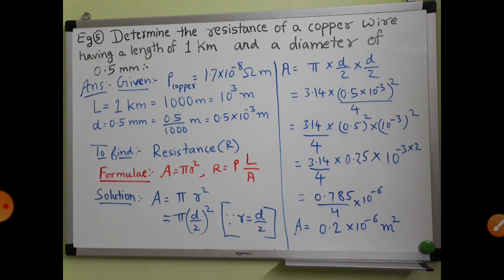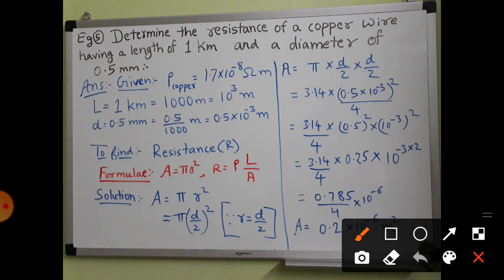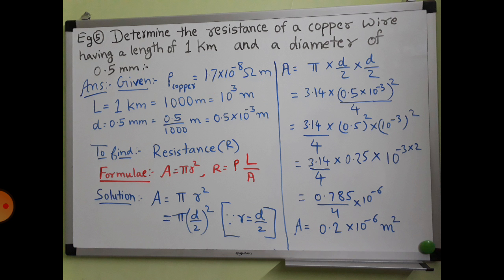Resistance is not given — that is what you have to find out. The given things we will now write: resistivity of copper is 1.7 × 10⁻⁸ ohm·meter, which is given in the example. You should know that resistivity of a substance is constant, so these resistivity values you should keep in mind.